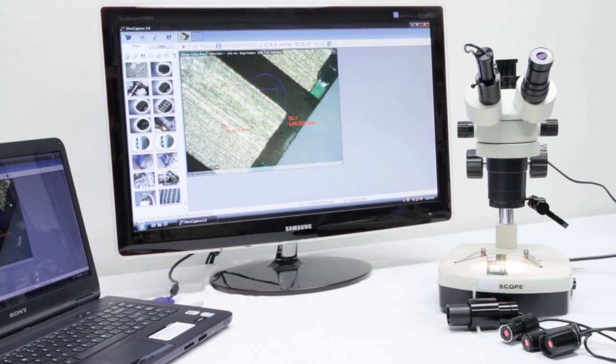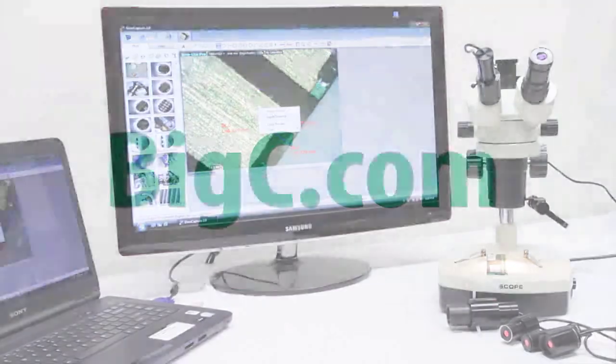A simple measurement from A to B is done easily by clicking a start and endpoint in the DynoCapture software. This is the Big C Support Team. Thanks for watching.